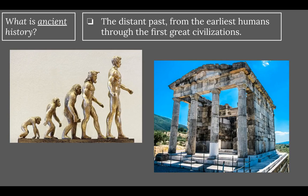First, we have this question: What is ancient history? Ancient history is the distant past from the earliest humans through the first great civilizations — thousands and thousands of years ago, before humans were as they are today. Some of the great civilizations like Greece, Rome, ancient China, and ancient India that we're going to study this year would all constitute ancient history.